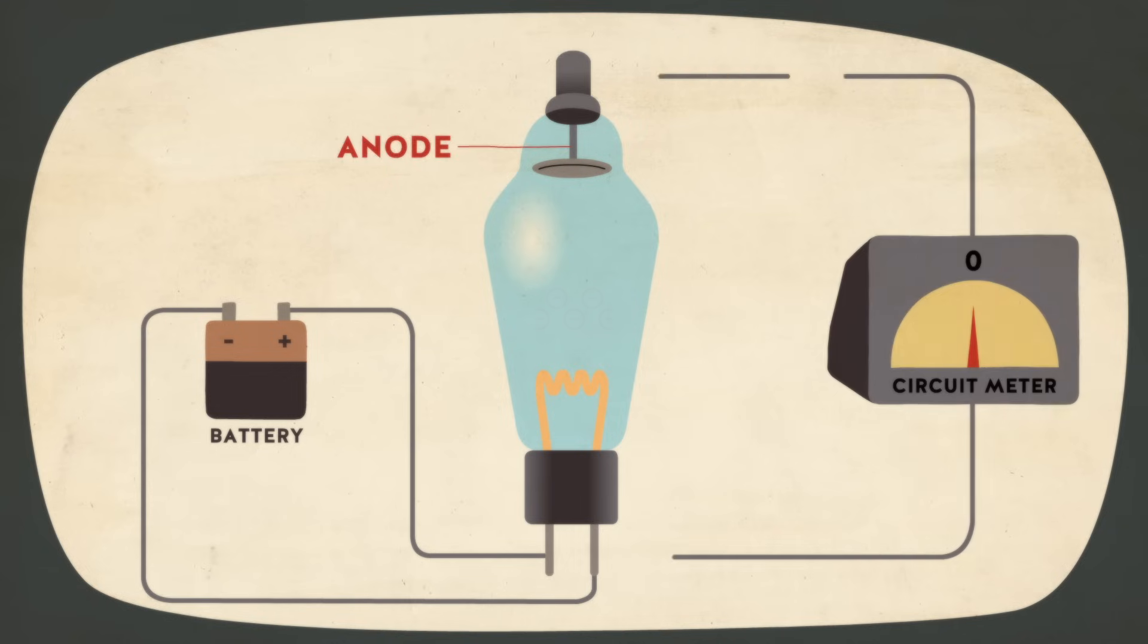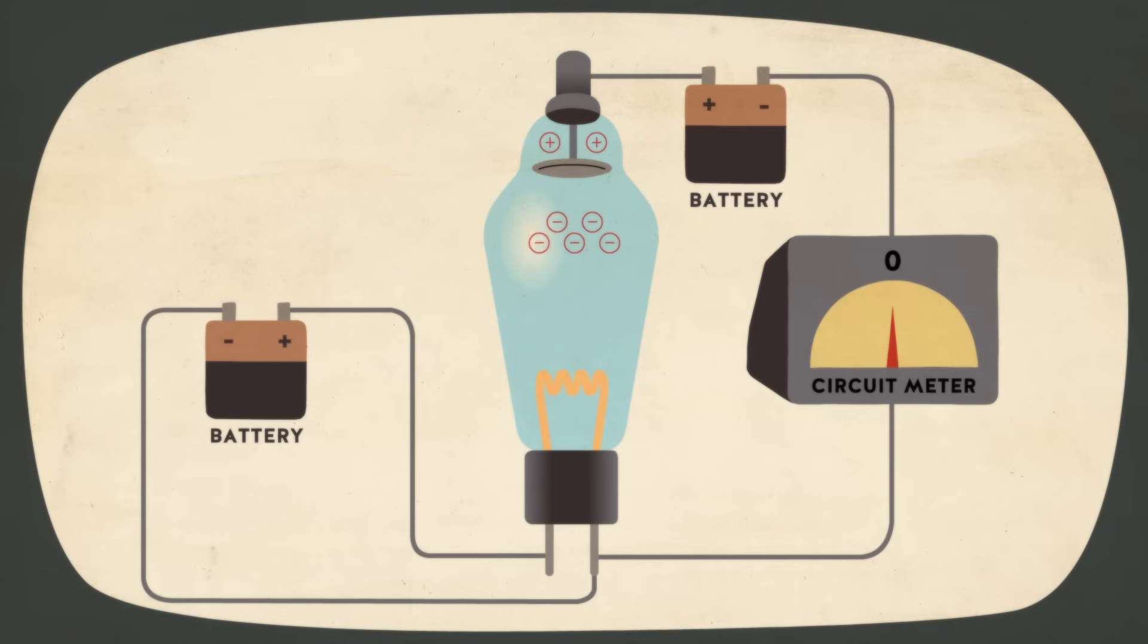If the anode is at a slightly higher positive potential, the electrons are attracted to it, completing the circuit. This unidirectional current flow could be controlled by varying the voltage to the cathode, which makes it release more or less electrons.